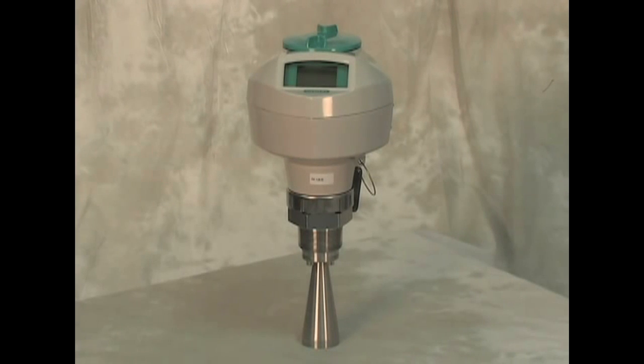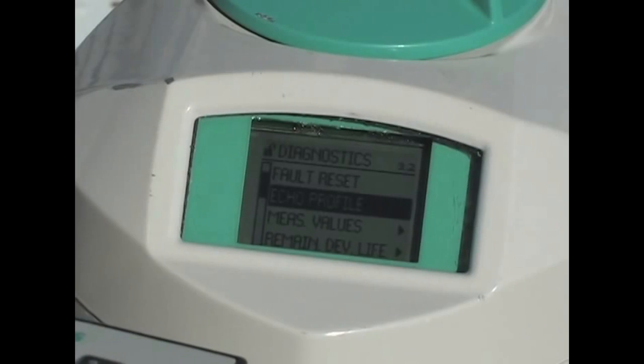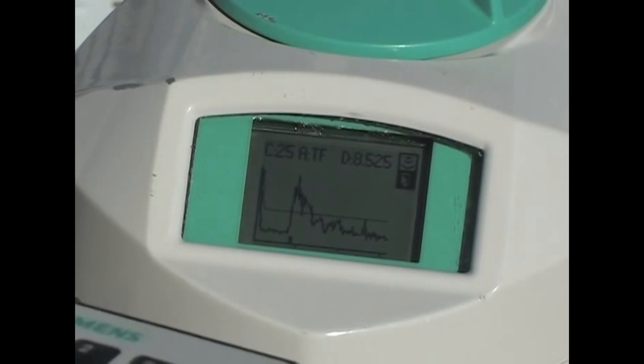The C-Trans LR250 also has process intelligence advanced echo processing for unparalleled performance. Siemens is the only company with process intelligence signal processing which uses a dynamic time varying threshold or TVT. The TVT automatically adapts to varying process conditions or internal obstructions to provide consistent, reliable measurements.